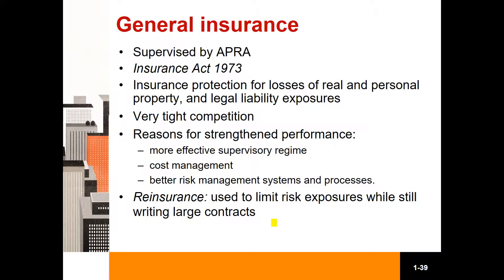Most of the general insurers are direct insurers — that is, companies that sell insurance policies directly to customers. In June 2014, 12 insurers were specialist reinsurance companies, which underwrite insurance from other insurers. While most general insurers will undertake some reinsurance activities, reinsurance is the only business of a specialist reinsurer.